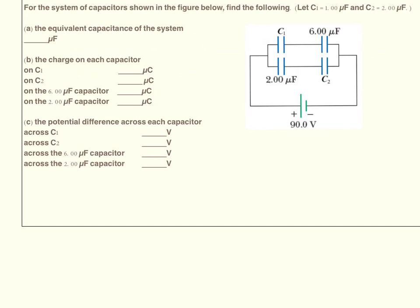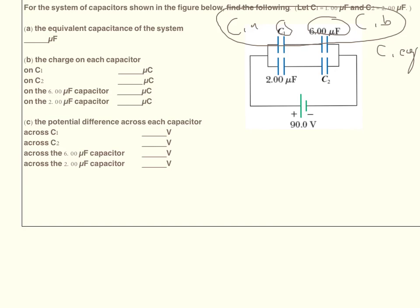I want to expand the definition of some of these variables. This variable C1, I'm going to expand and call it C1A, and this I'm going to call C1B. The combined capacitance of both of those I'll call C1 or C1EQ. Likewise at the bottom, this is going to be C2A, this is going to be C2B, and the combined capacitance of both of them would be C2 or C2EQ.